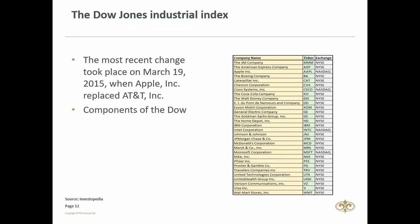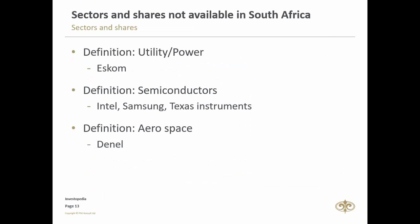On this slide you can quickly see all 30 shares listed on the Dow, from American Express all the way down to Walmart. Very interestingly, the most recent change to this index was in March 2015 when Apple replaced AT&T as a Dow component. Moving on to sectors not listed in South Africa — the first one that comes to mind is the utility sector.